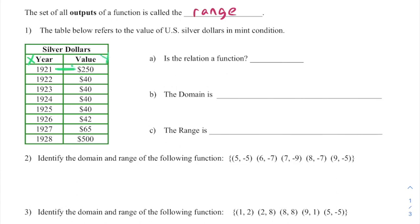Our outputs are going to be these values and that's y. So in 1921 that silver dollar is worth $250, a 1922 silver dollar is worth $40, etc.